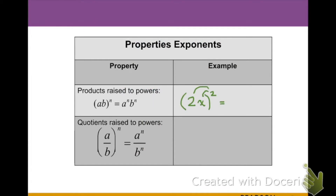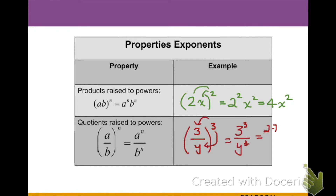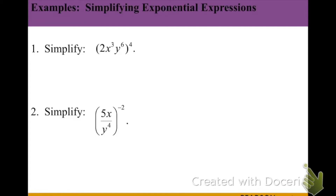When raising a product as our base — a times b all to the n power — we distribute that exponent to everything in the base. So 2x all squared means squaring both the 2 and the x, giving us 4x squared. Same with a quotient: 3 over y all cubed becomes 3 cubed over y cubed, which simplifies to 27 over y cubed. Note: a simplified answer should always have no negative exponents and only one of each type of base.